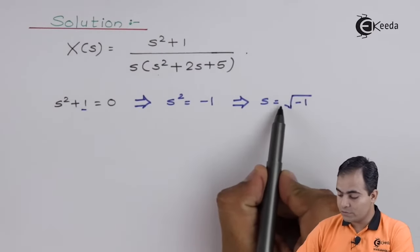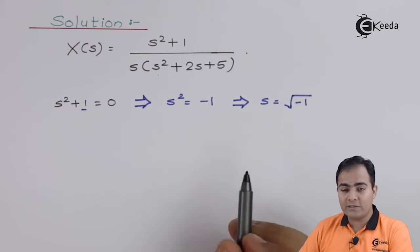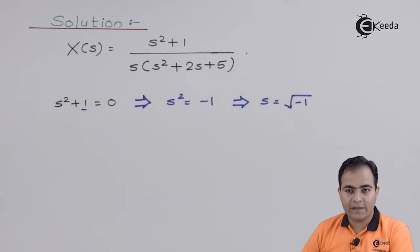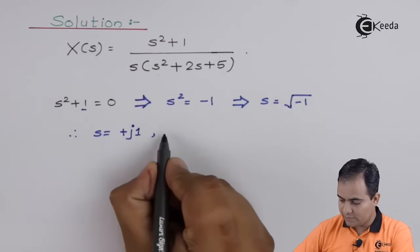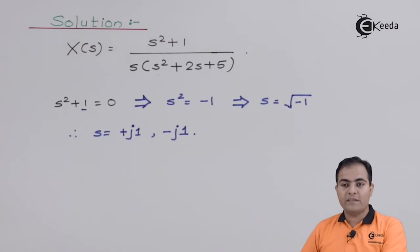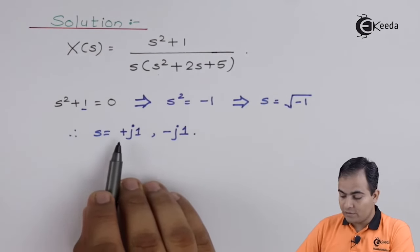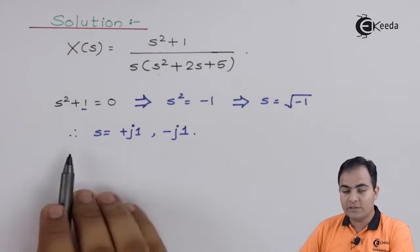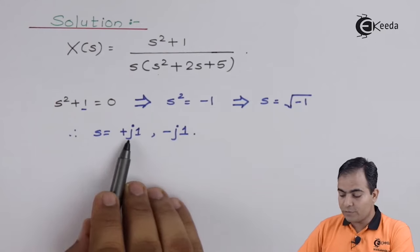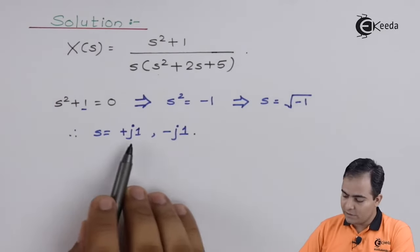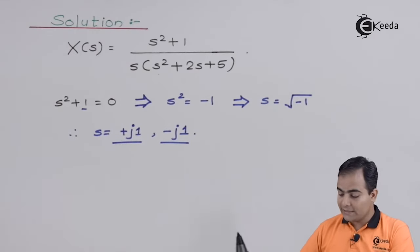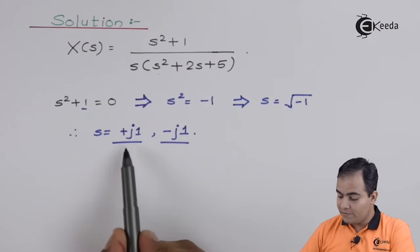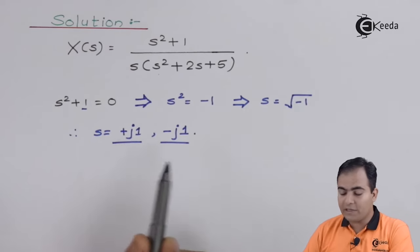We know that √(−1) is equal to j. So we can write s = +j1 or s = −j1. These are the values of the zeros. As we noted, the order of s in the numerator is 2, which means we have two zeros, and their values are s = +j1 and s = −j1.